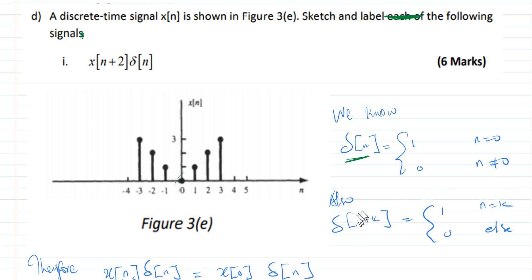The other point we want to remember is that the sequence represented by delta of n minus k will be equals to 1 when n is equals to k and will be 0 otherwise.